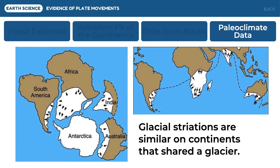Using the glacial striations directions, Wegener showed that the glacial striations in South America, South Africa, India, and Australia can only mean that all glaciation was experienced at about the same time. The striations point to continental glaciers originating in various locations in their current positions. However, striations point to one continent by aligning the continents.